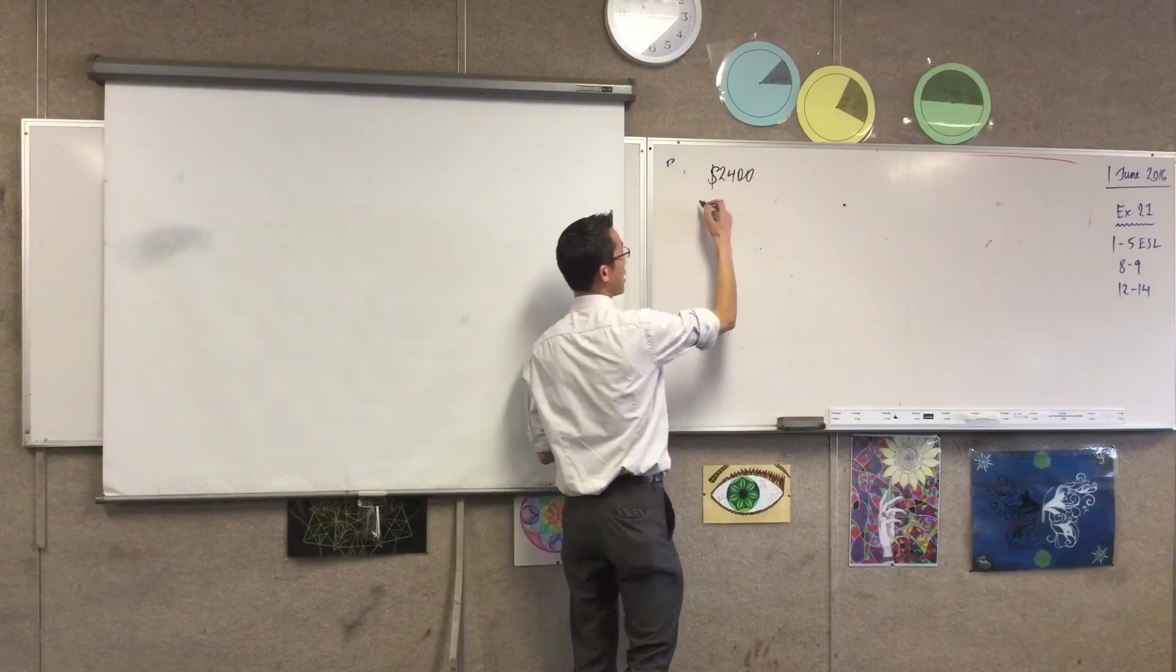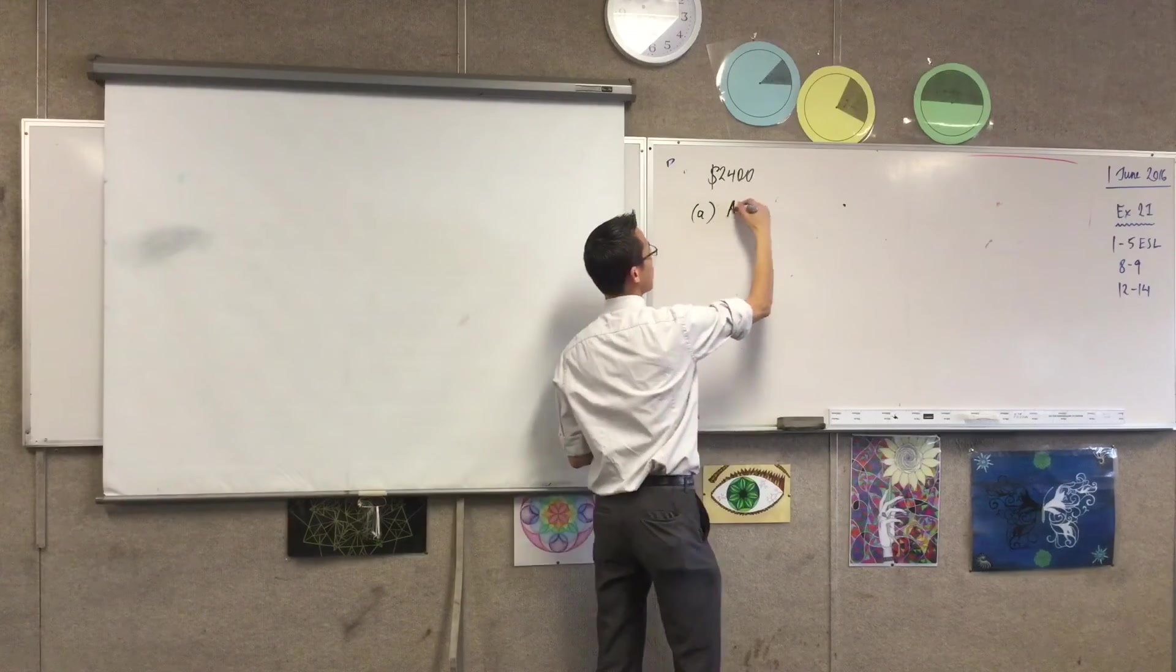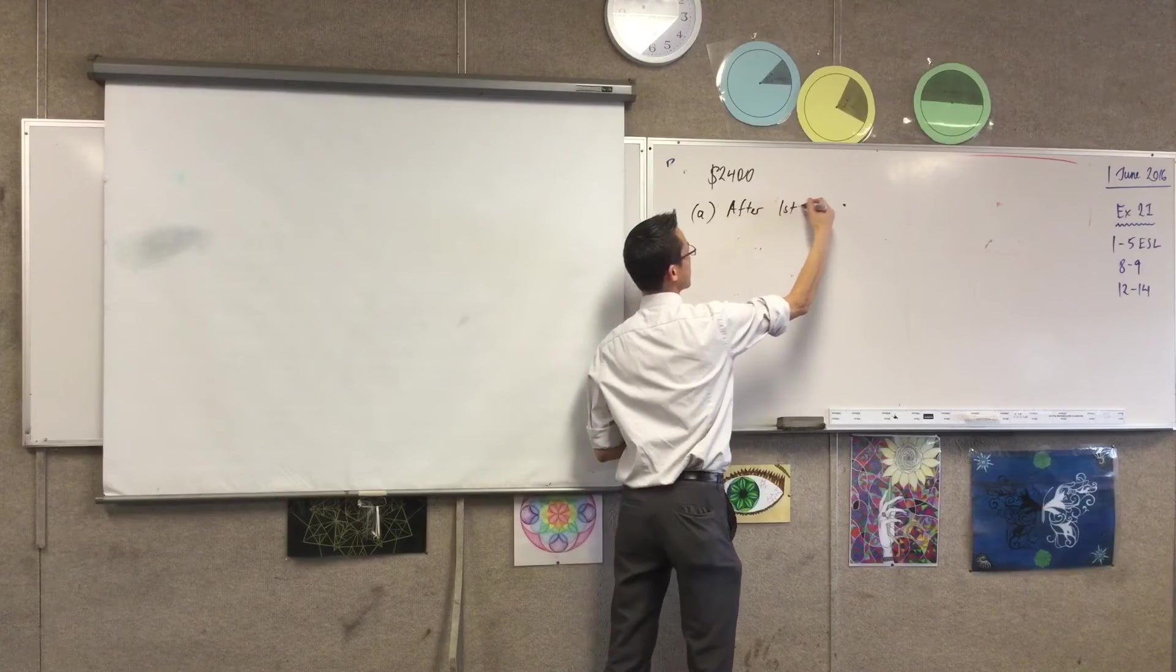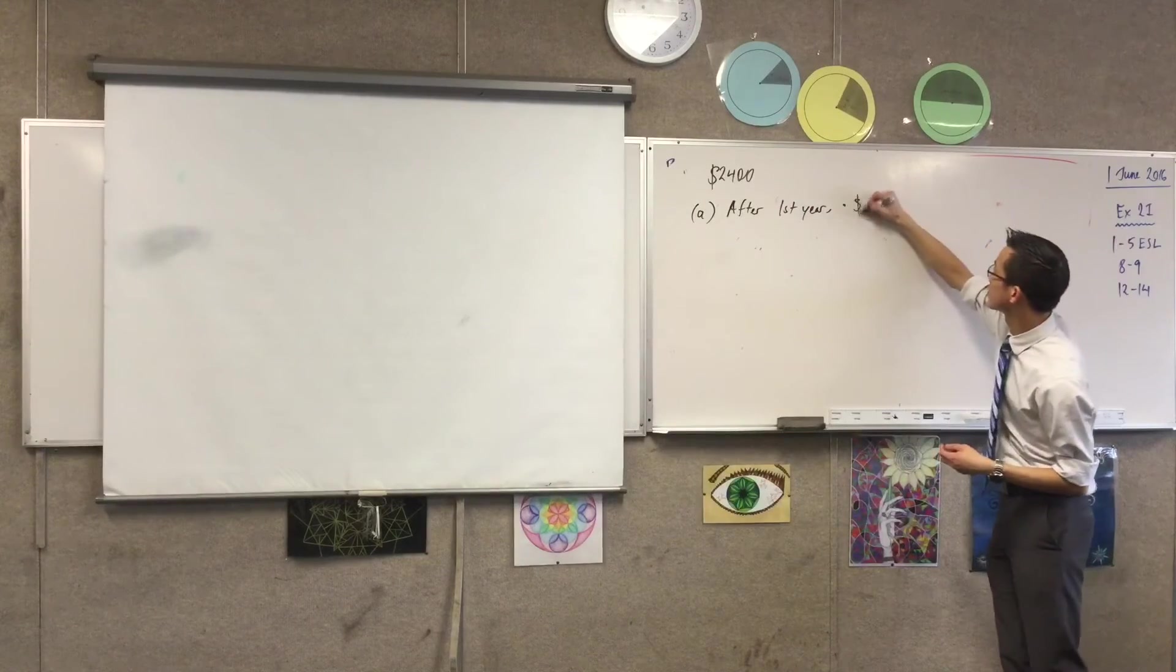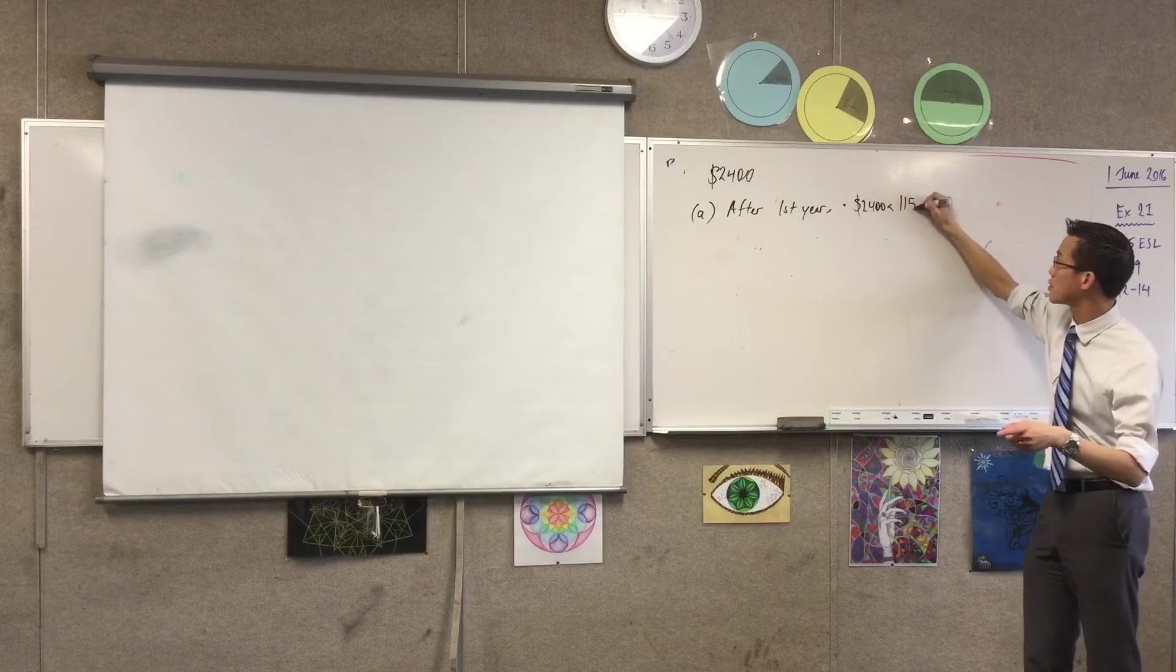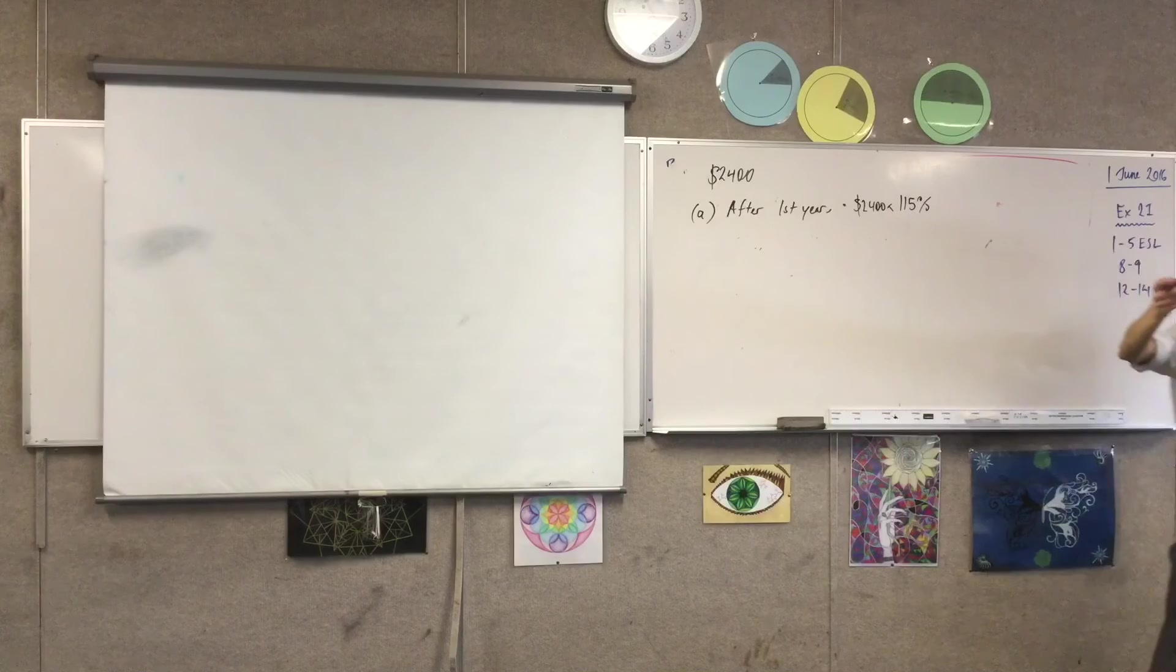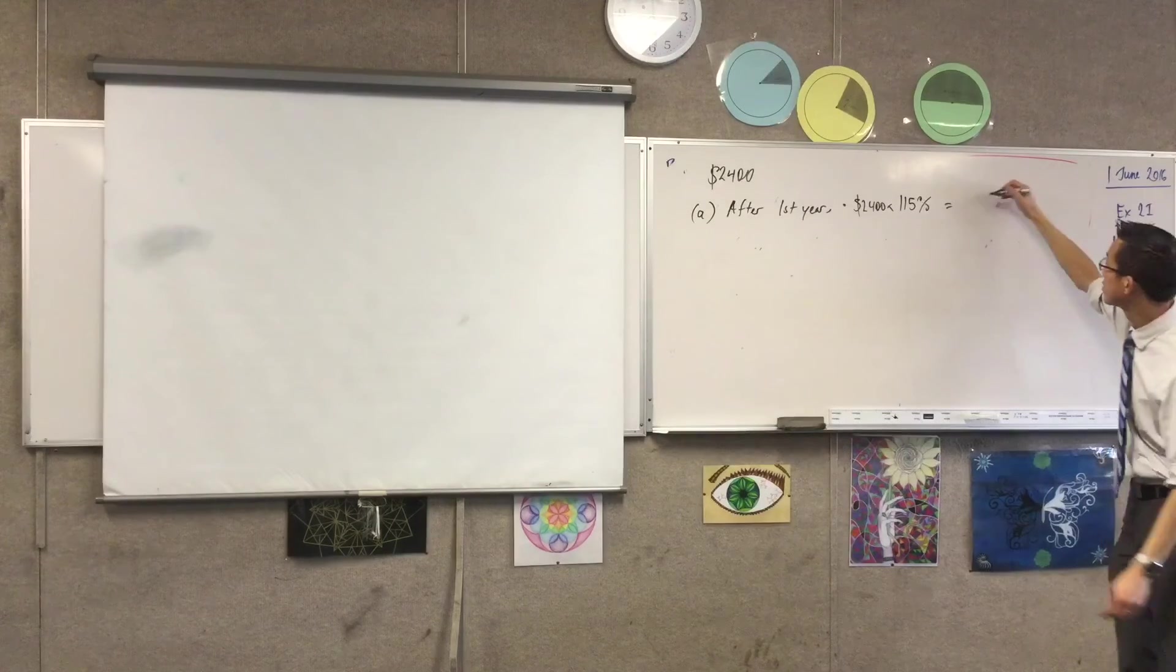If in the first year it increases by 15%, what do you have at the end of that first year? So can we work this out? You can tell me what working to put down. After the first year, what do I get? 2,400 times 115%. So there's that original 100, and the 15 comes along from the increase. Can someone give me a number? 2,760. Thank you.